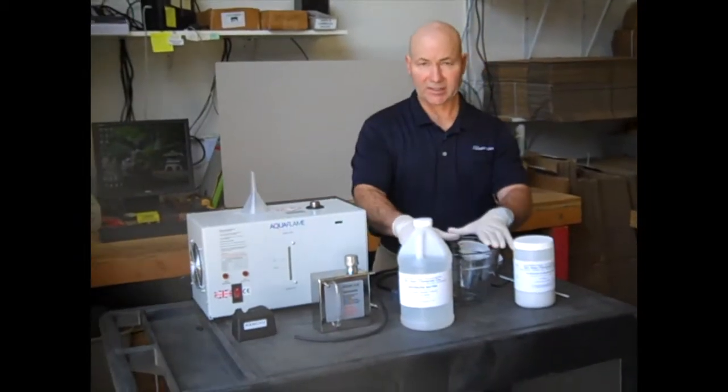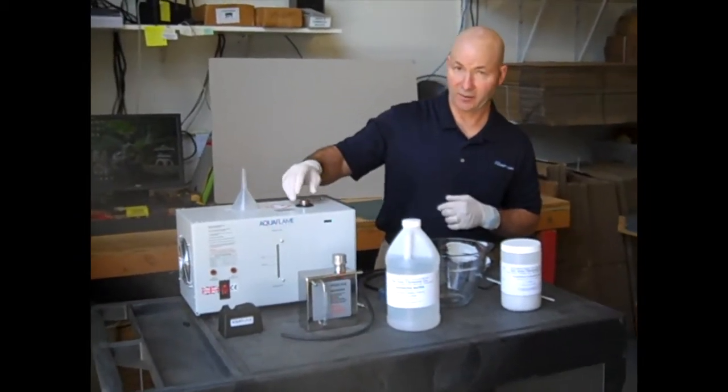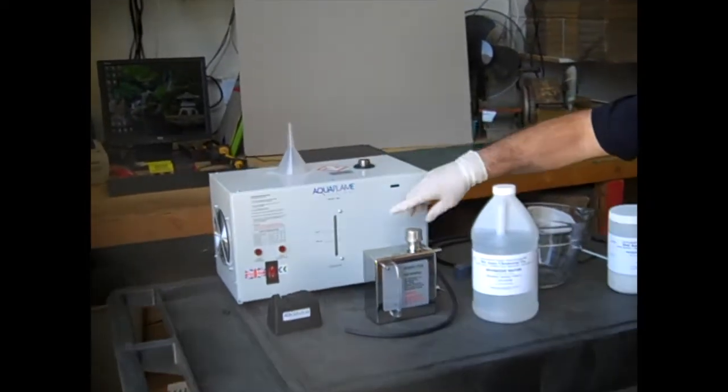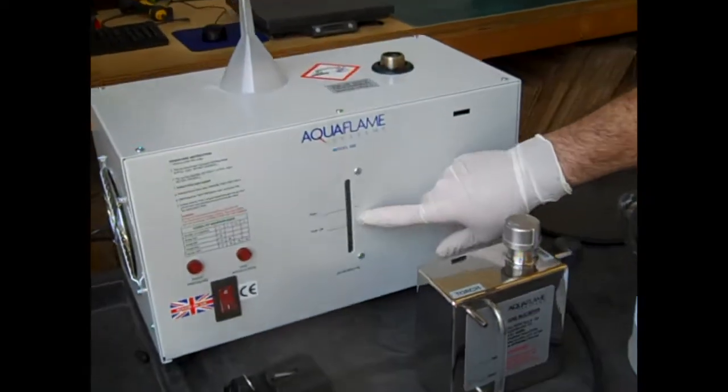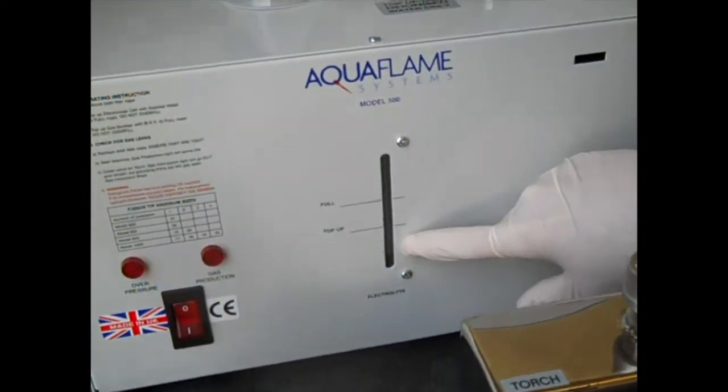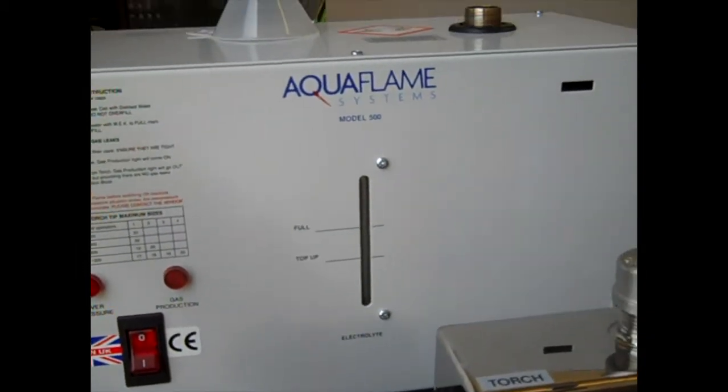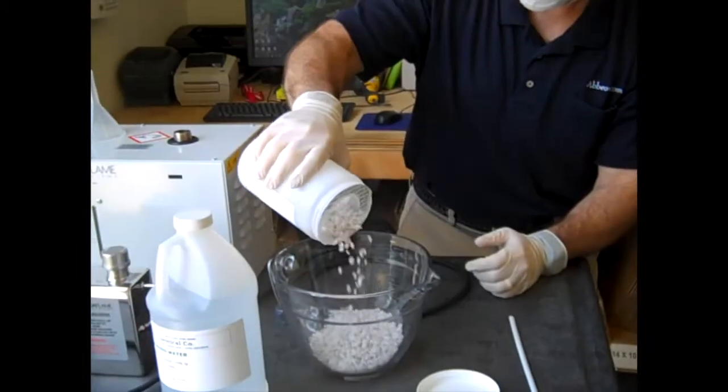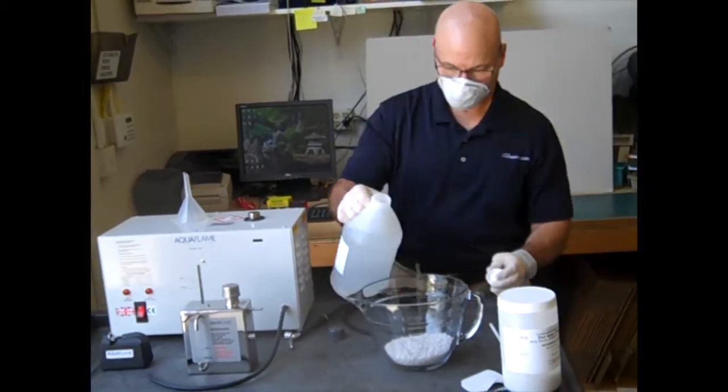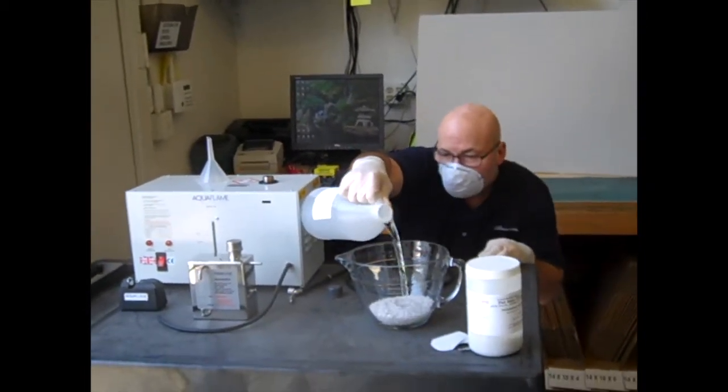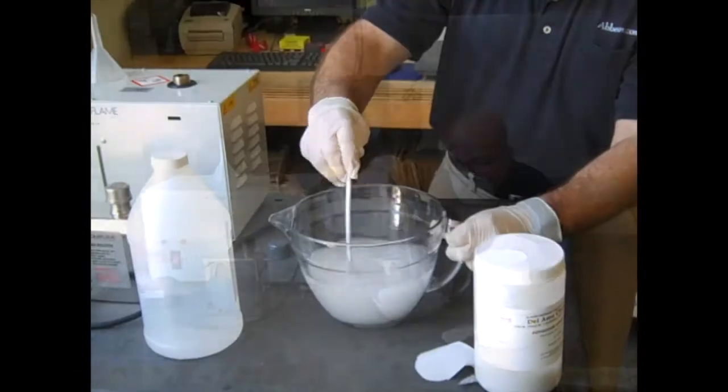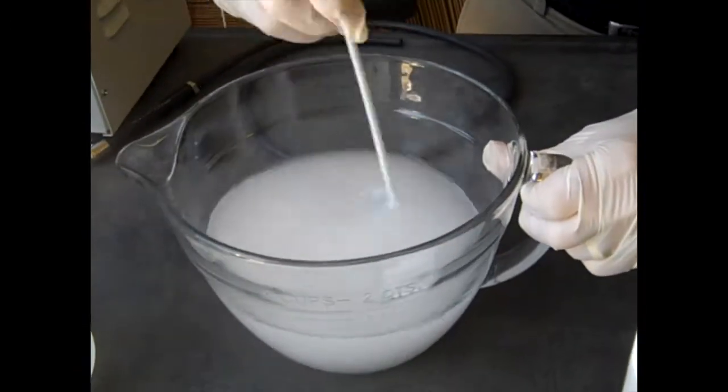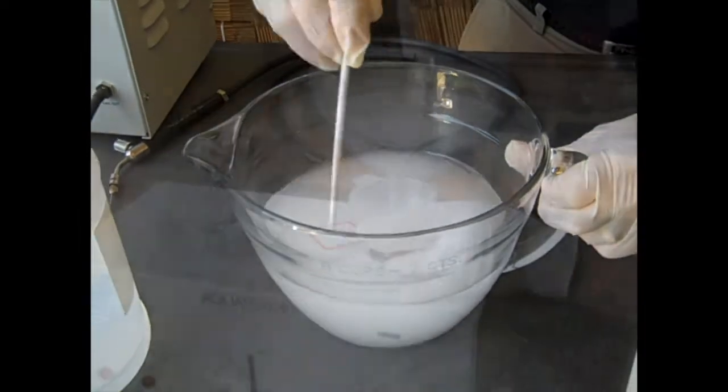When we get that mixed in here, we're going to put it into this container up here. On the front of the machine, you'll see that there's a top-up and a full. We're going to look for that water to rise up to the top-up level there. We're going to stir that up and dissolve those crystals in the water.